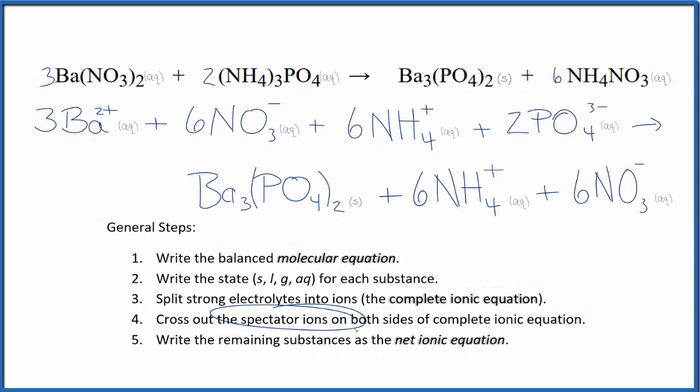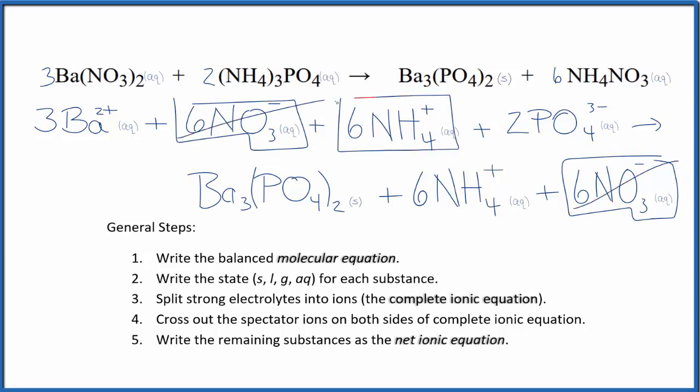Now we cross out those spectator ions that are on both sides of the complete ionic equation. So in the reactants here, we have six nitrate ions. In the products, we have six nitrate ions. These are spectator ions, so we remove those. Six ammonium ions in the reactants, six ammonium ions in the products. Spectator ions, cross them out.